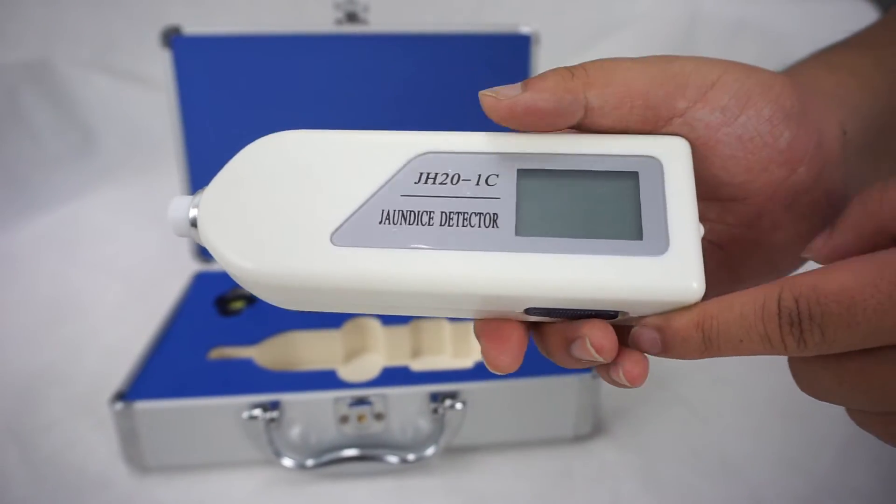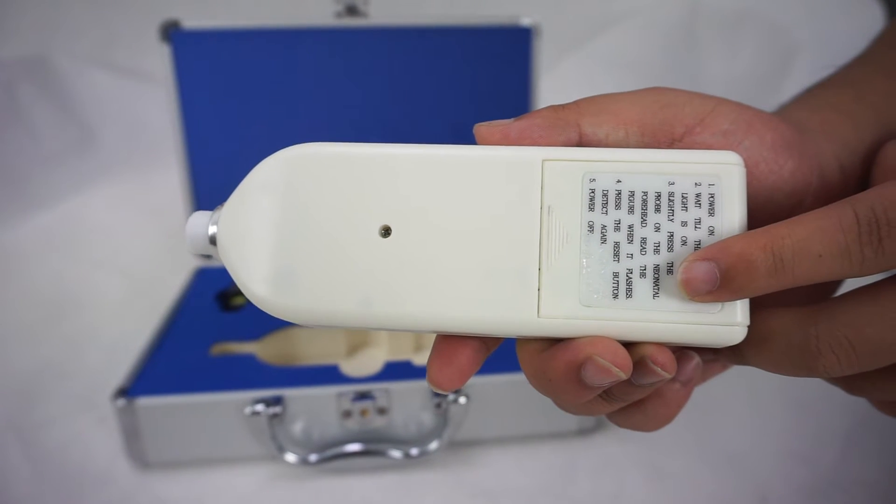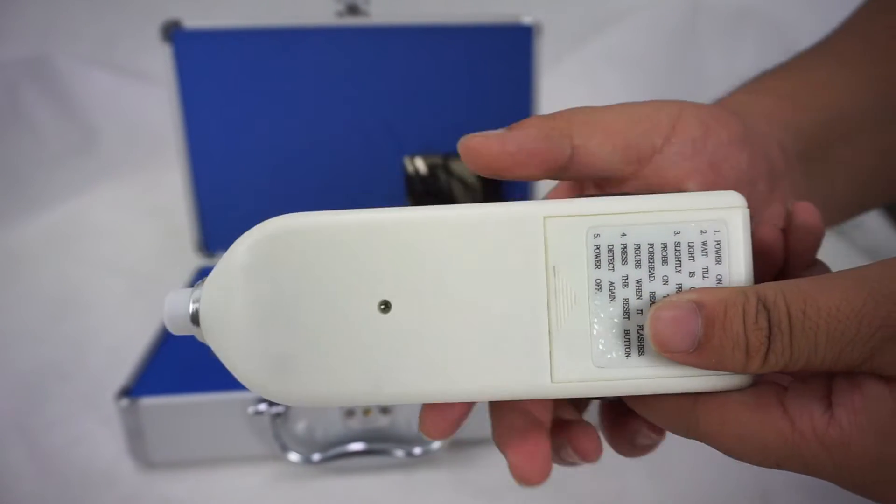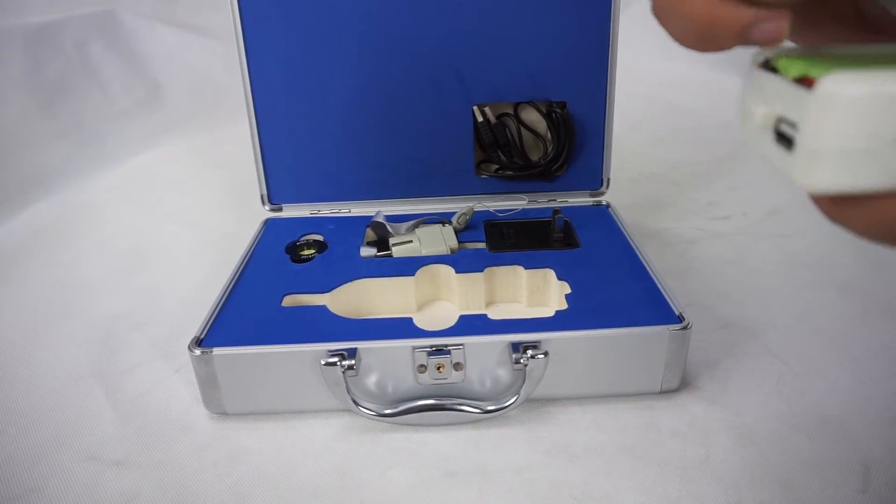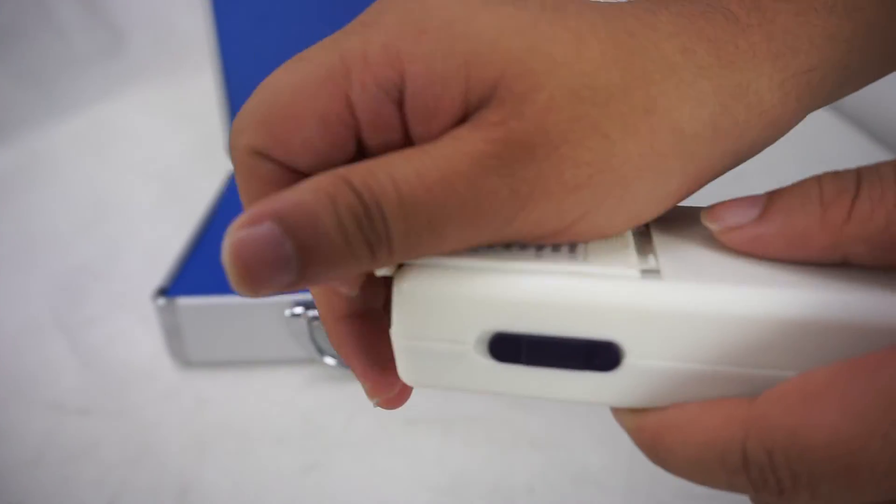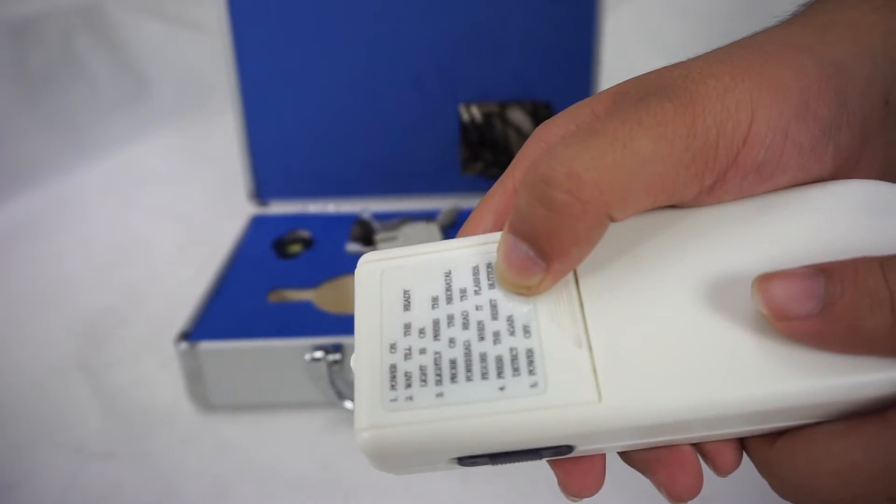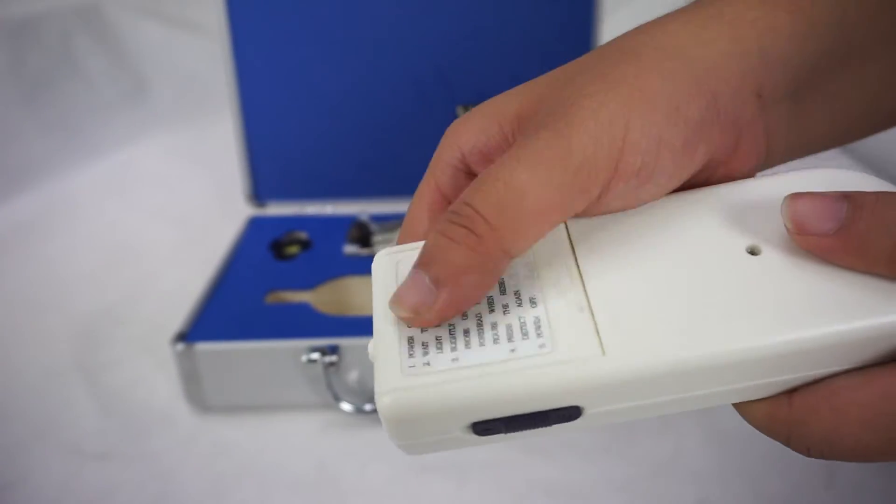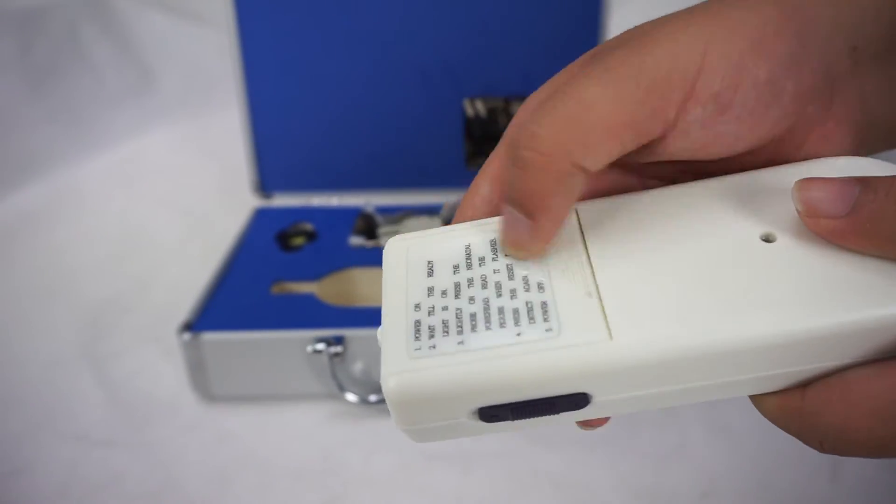And on the back is the battery box. In it, there is a rechargeable battery. And there are some words on the battery box to tell you how to operate the machine.